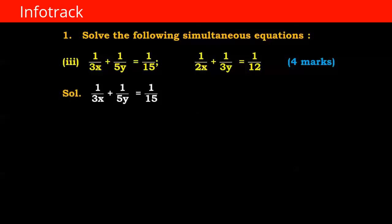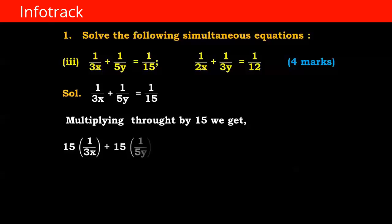For the first equation, 1 upon 3x plus 1 upon 5y equals 1 upon 15, we will multiply throughout by 15. We get 15 into 1 upon 3x plus 15 into 1 upon 5y equals 15 into 1 upon 15. The 15s cancel and we get 5 upon x plus 3 upon y equals 1 — equation number 1.